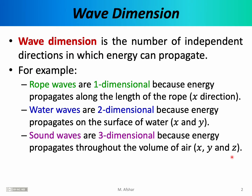Notice that the dimensionality of the wave is a little different than the dimensionality of the graph for that wave. For example, rope waves are considered one dimensional because energy travels in one dimension, but if you were going to make a graph of rope waves, you would actually need a three dimensional graph — one axis for x, one axis for t (time), and a third axis for displacement in the y direction. So the wave dimension is a little bit different than the dimension of the graph you might draw to represent the wave.